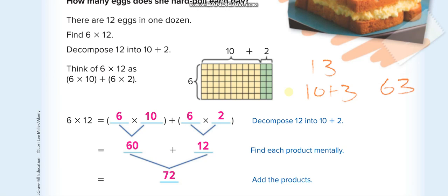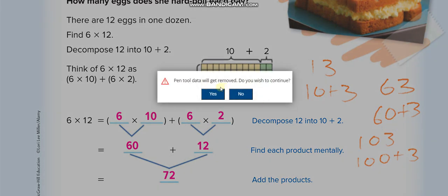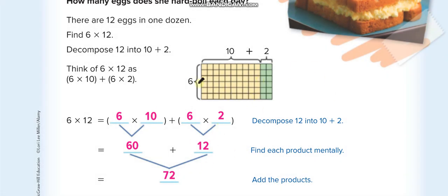For example, if you have 63, you can break it into 60 plus 3. Or if you have 103, you can do 100 plus 3. You can also break a number into three parts — for example, 163 becomes 100 plus 60 plus 3, like the expanded form. But in this lesson we'll focus on just two parts.